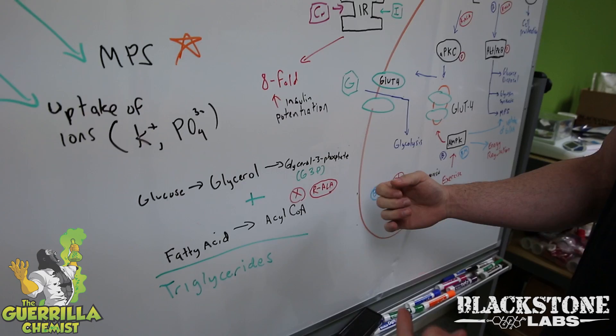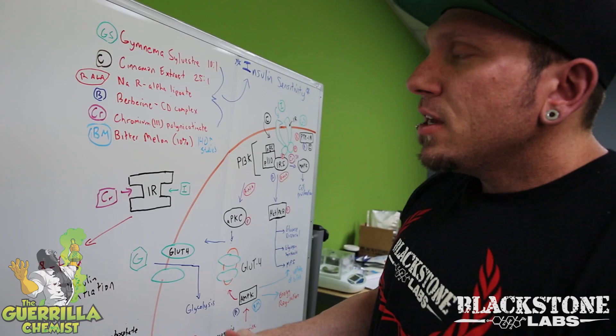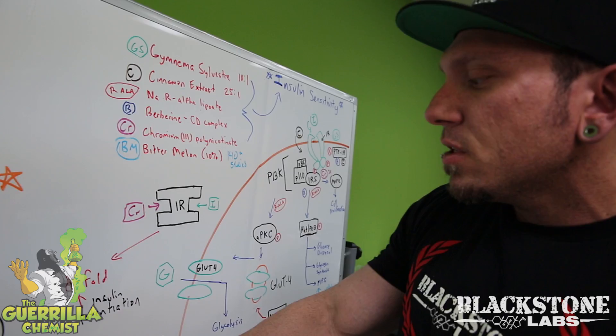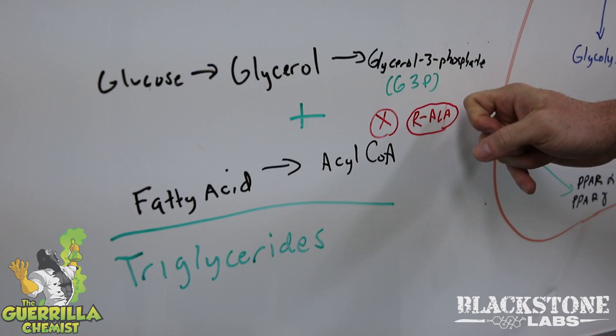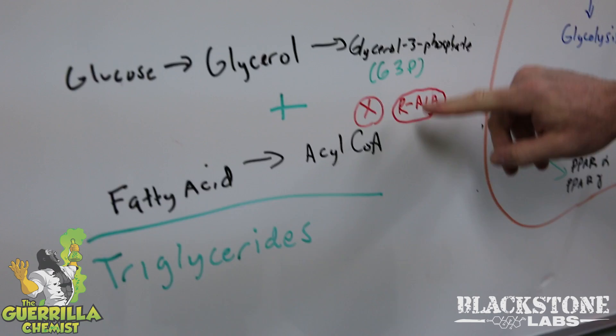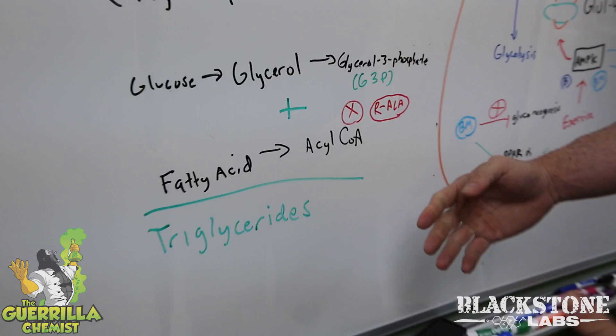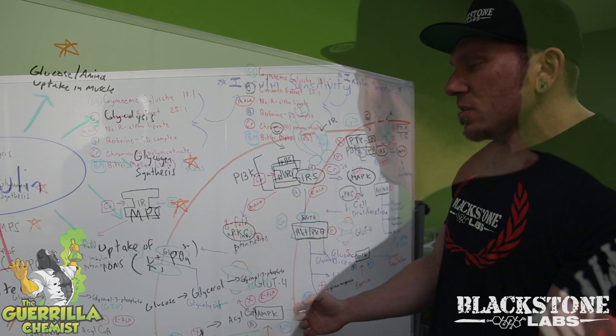One more interesting thing about alpha lipoic acid: insulin can also store fat. How we make fatty acids involves breaking down glucose to glycerol, and then fatty acids in your bloodstream combine with acetyl-CoA to make triglycerides. R-ALA actually blocks the enzyme that connects glycerol-3-phosphate with acetyl-CoA, so you're not making triglycerides — you have less chance of storing things as fat and more is directed into your muscles.